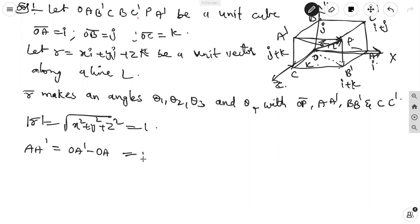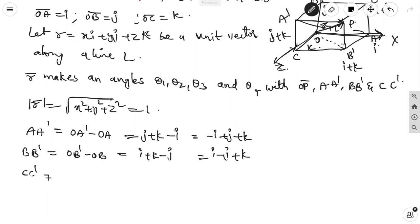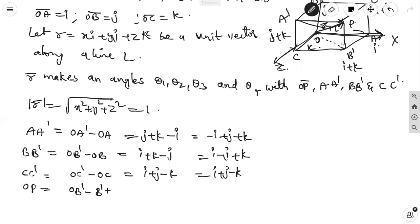So OA dash = j + k − i = −i + j + k. In the similar way, BB dash = OB dash − OB. B dash is i + k minus j, equal to i − j + k.